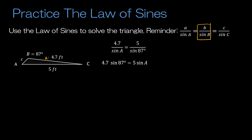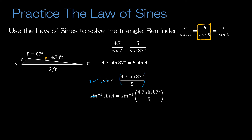The math is pretty straightforward — cross multiply, divide to get sine of A by itself. Now, we're trying to solve for A, and in order to get rid of sine, I have to take the inverse sine of each side. I want you to plug it in just like this: take the inverse sine of 4.7 times sine of 87 divided by 5. What a lot of students do is approximate 4.7 times sine of 87 divided by 5 step by step — that gives rounding upon rounding upon rounding. So take your calculator and plug it in all at once, and you should get that A is about 69.84 degrees.